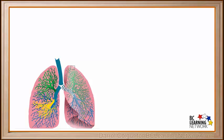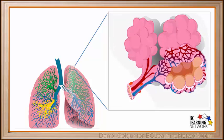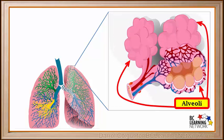We'll start by looking at the lungs. If we zoom in on this section, these air sacs surrounded by capillaries are called alveoli. A waste product from cellular respiration, carbon dioxide or CO2, is dissolved in the blood coming into the lungs. This diffuses from the capillaries into the alveoli.